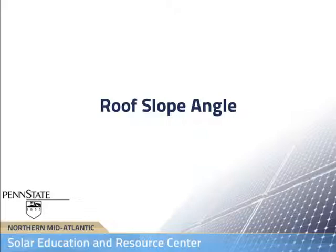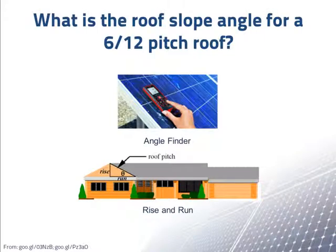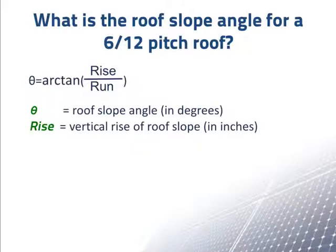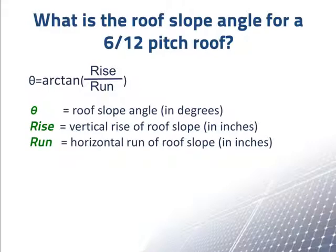Here is a quick example of how to calculate roof slope angle. Let's say we want to calculate the roof slope angle for a 6/12 pitch roof. This means that every increase in height of 6 inches does so in 12 inches of length. Going back to trigonometry, we know theta equals the arc tangent of rise over run, with theta standing for roof slope angle measured in degrees, rise standing for rise of roof slope measured in inches, and run standing for run of roof slope measured in inches.